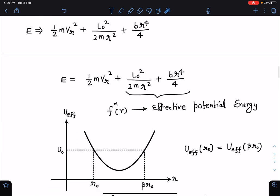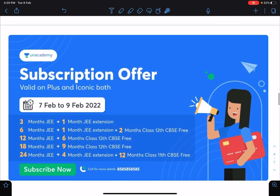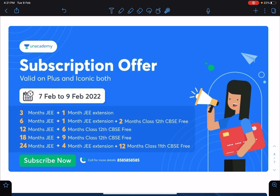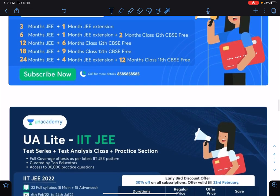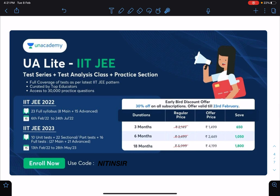There is an offer for subscription valid for Plus and Iconic both and it is going to last from 7th February to 9th. With 3 months you will have 1 month extension, 6 months 1 month extension plus 2 months CBSE, 12 months 6 months CBSE is free, 18 months 9 months CBSE is free, 24 months 4 months JEE exchange and 12 months class 11th CBSE is free. Those who want to join me or connect with us through Unacademy can look for these offers using my code NITINSIR.